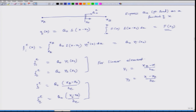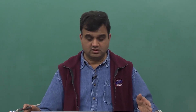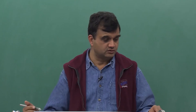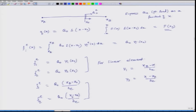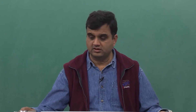So if you have a point load in the middle of an element, you can do two things: either break the element further so there is a node at that point, or use this mathematics to distribute the load between the two nodes accordingly. If it is a three-noded element, then you use psi1, psi2, psi3, and so on. This is the concluding part of this lecture and we will continue our discussion tomorrow. Thank you.